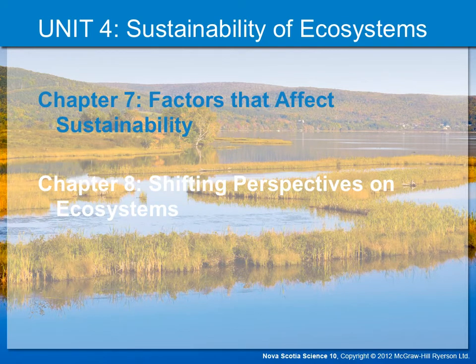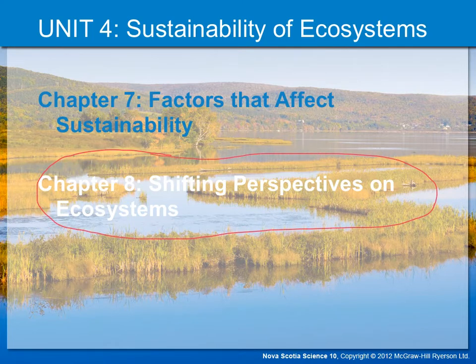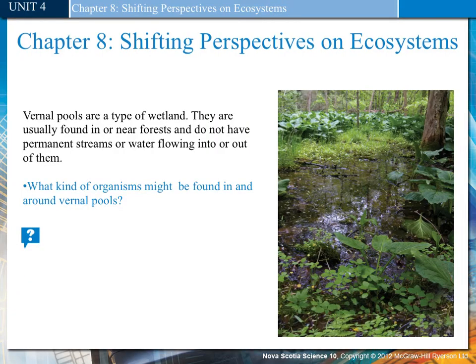Unit 4: Sustainability of Ecosystems, Chapter 8: Shifting Perspectives on Ecosystems. Vernal pools are a type of wetland that are usually found in or near forests and do not have permanent streams or water flowing into or out of them.